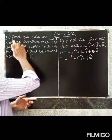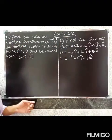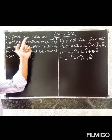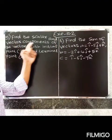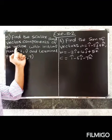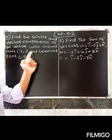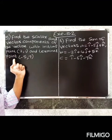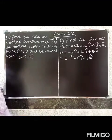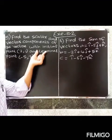Friends, you have my exercise 10 point rule, 5th question work. Find the scalar and vector components of the vector with initial point (2,1) and terminal point (-5,7).